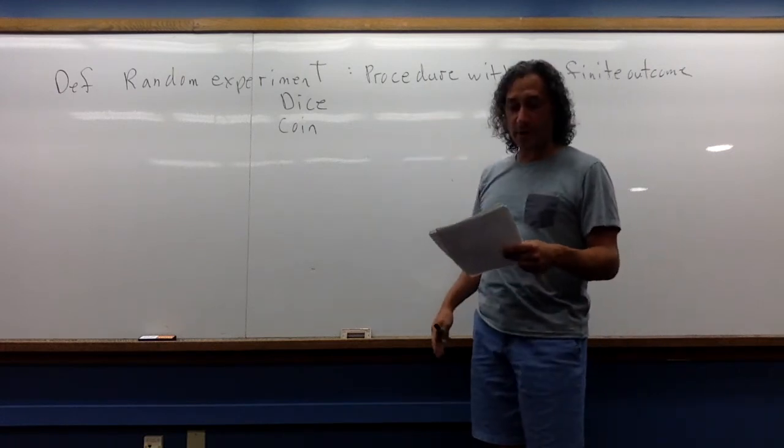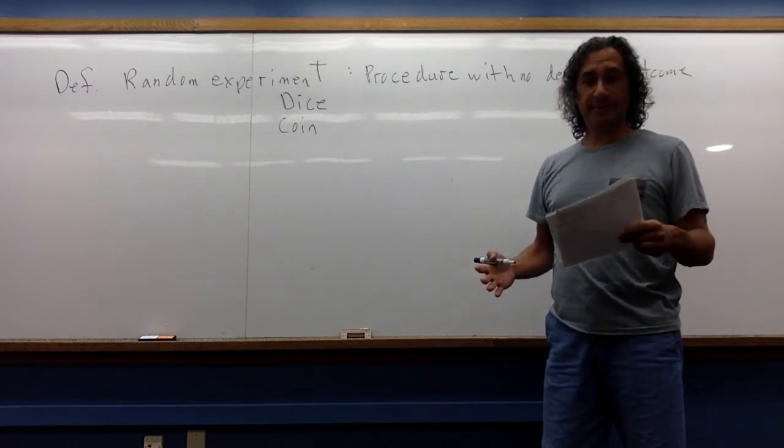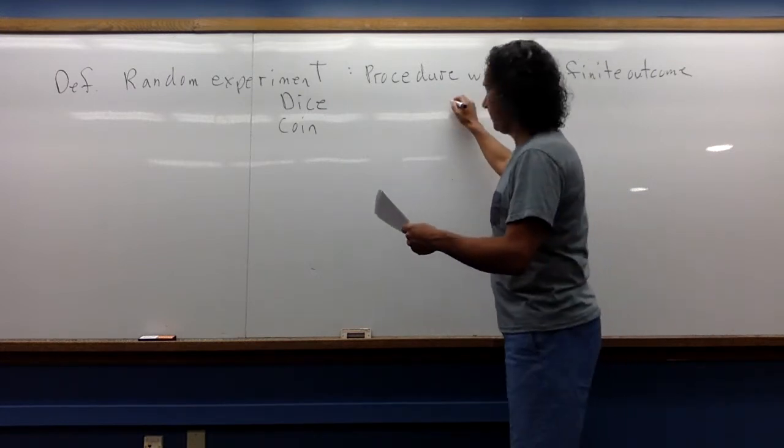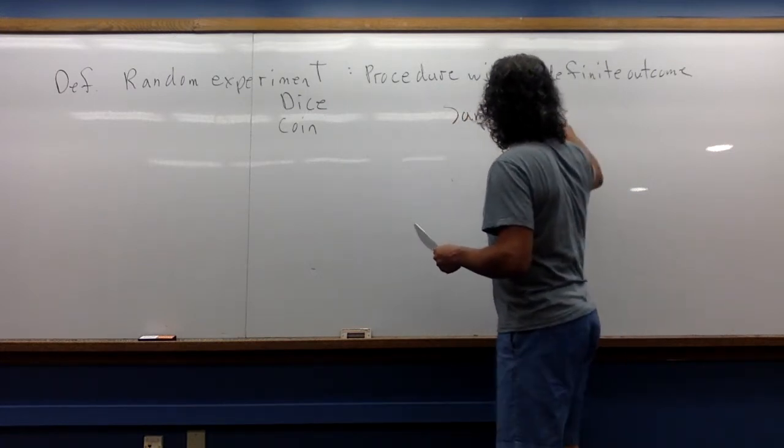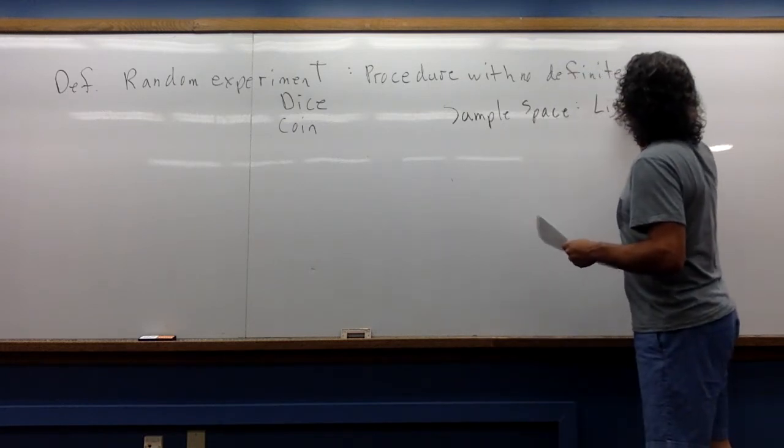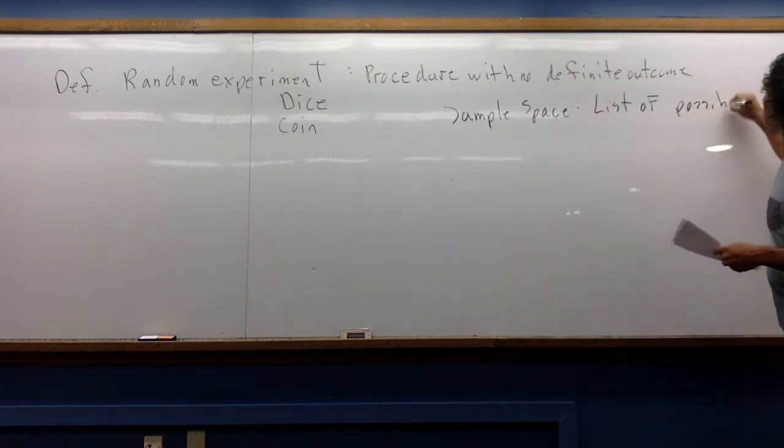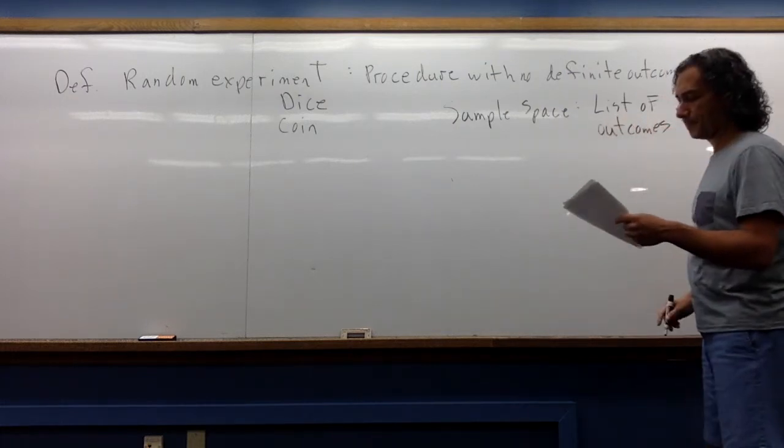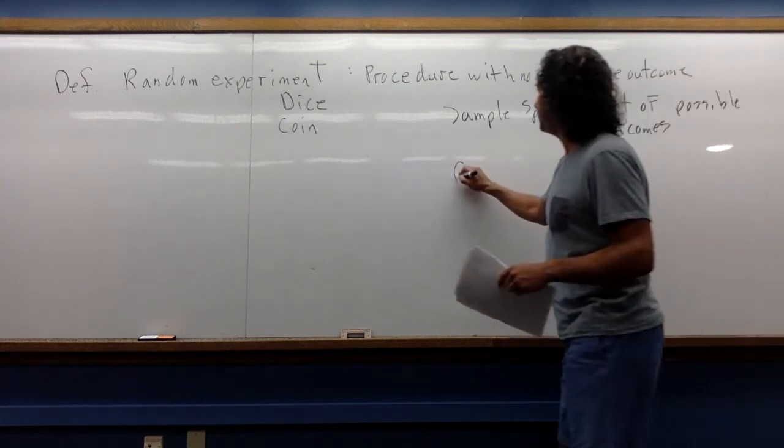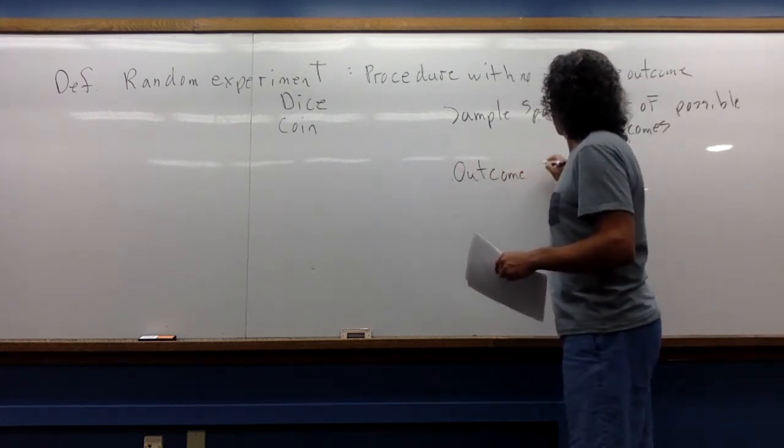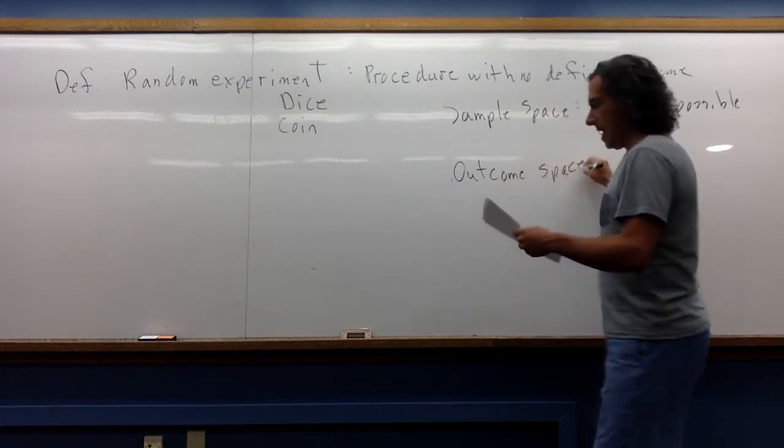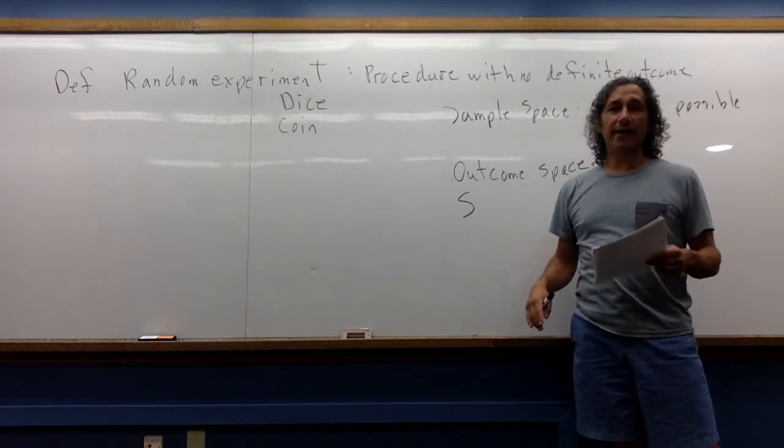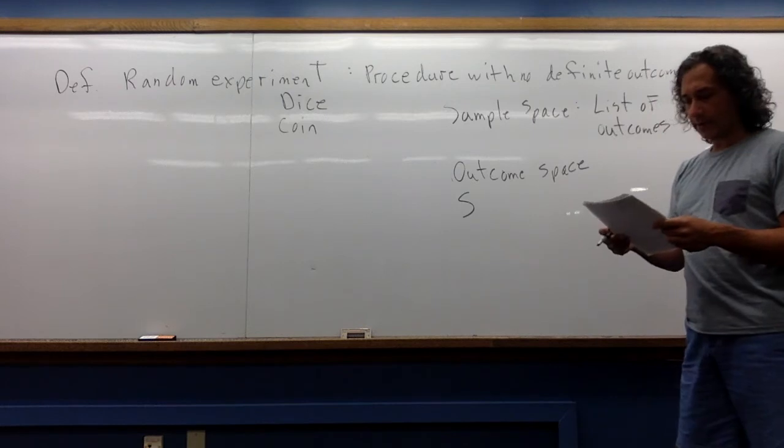So once we have a random experiment, we can list the possible outcomes. And in doing so, we get what's called a sample space. The sample space is just the list of possible outcomes. It's also called the outcome space, and it's typically denoted by the letter S.